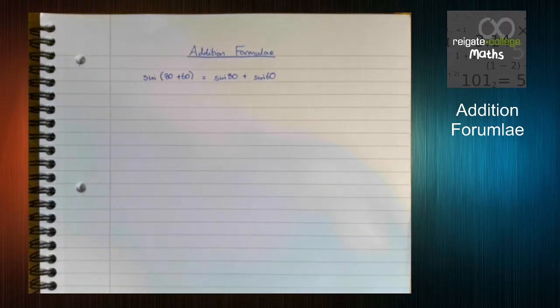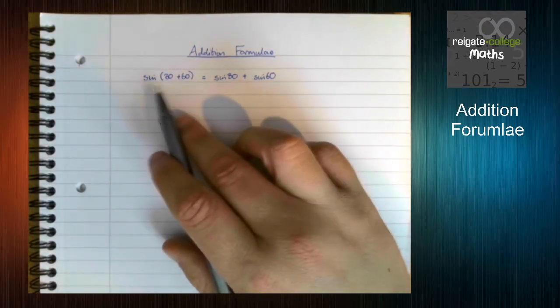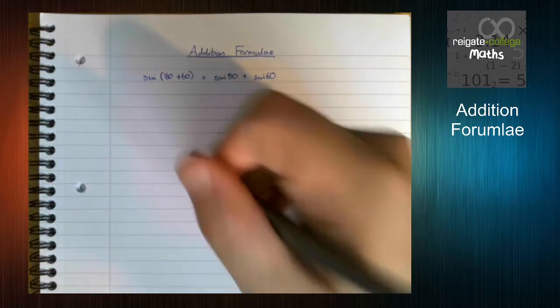Commonly, the error is thinking that trig expands like normal brackets. A quick calculation shows that this isn't the case. We can see that sine 60 plus 30 is 90.